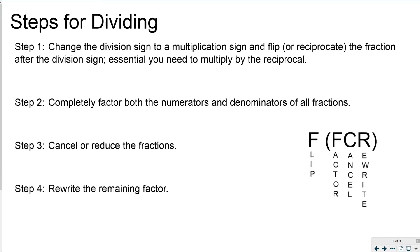The steps for dividing are very similar to the steps for multiplying — in fact, the steps for multiplying are contained within the steps for dividing. There's just one additional step: first, you take the division sign, change it to multiplication, and flip the fraction after the division sign. So instead of FCR (Factor, Cancel, Rewrite), it is now FFCR: Flip, Factor, Cancel, Rewrite.